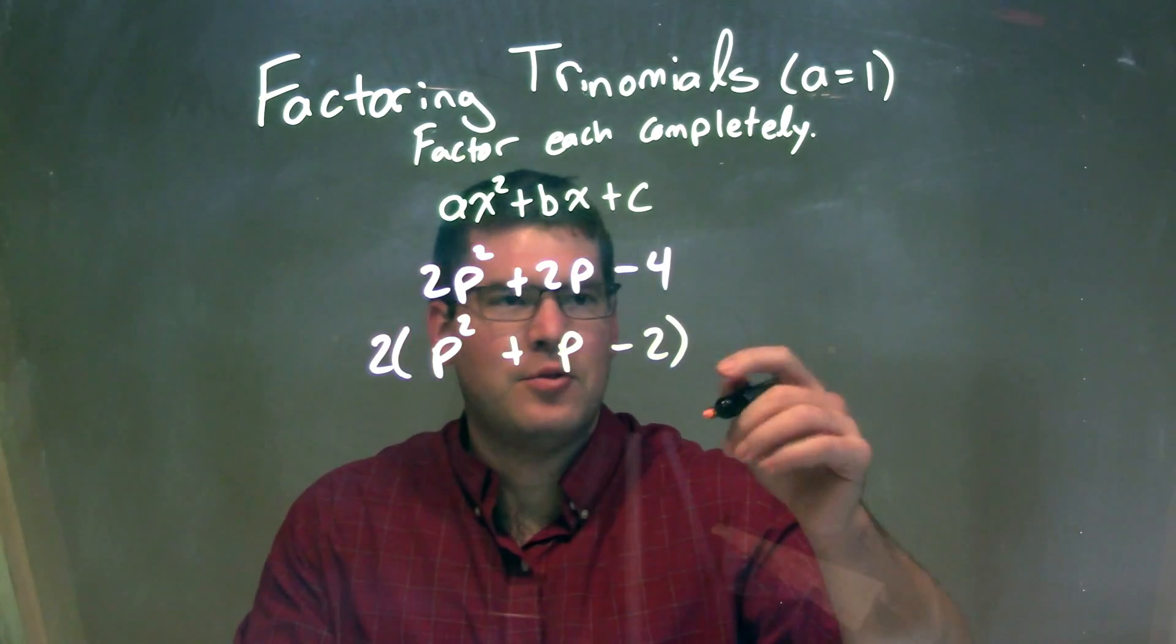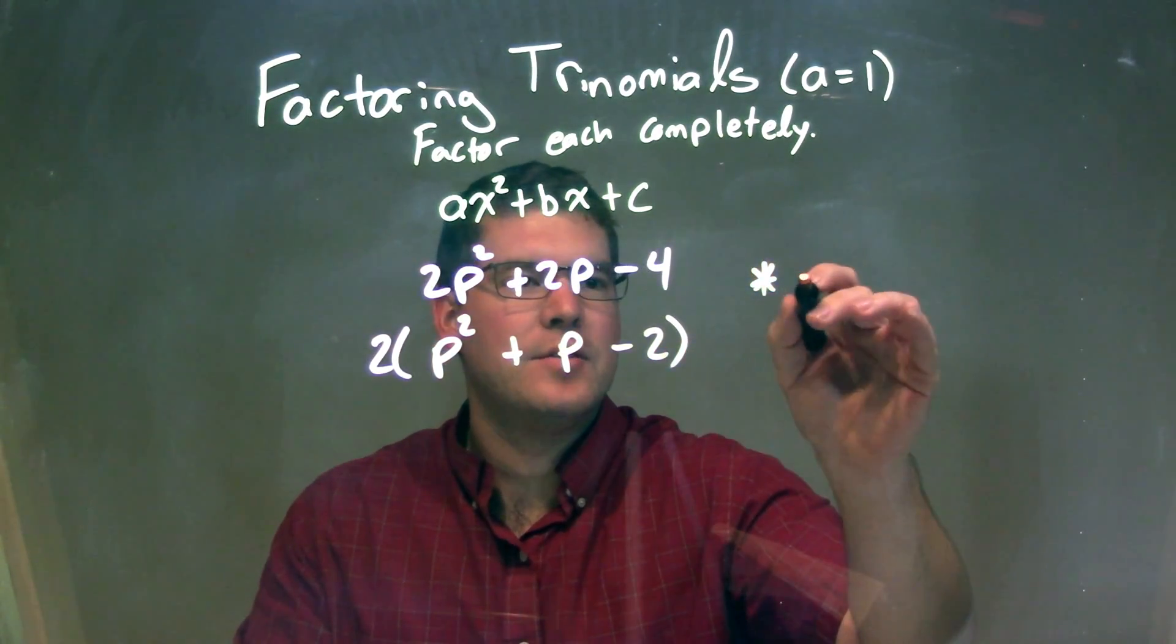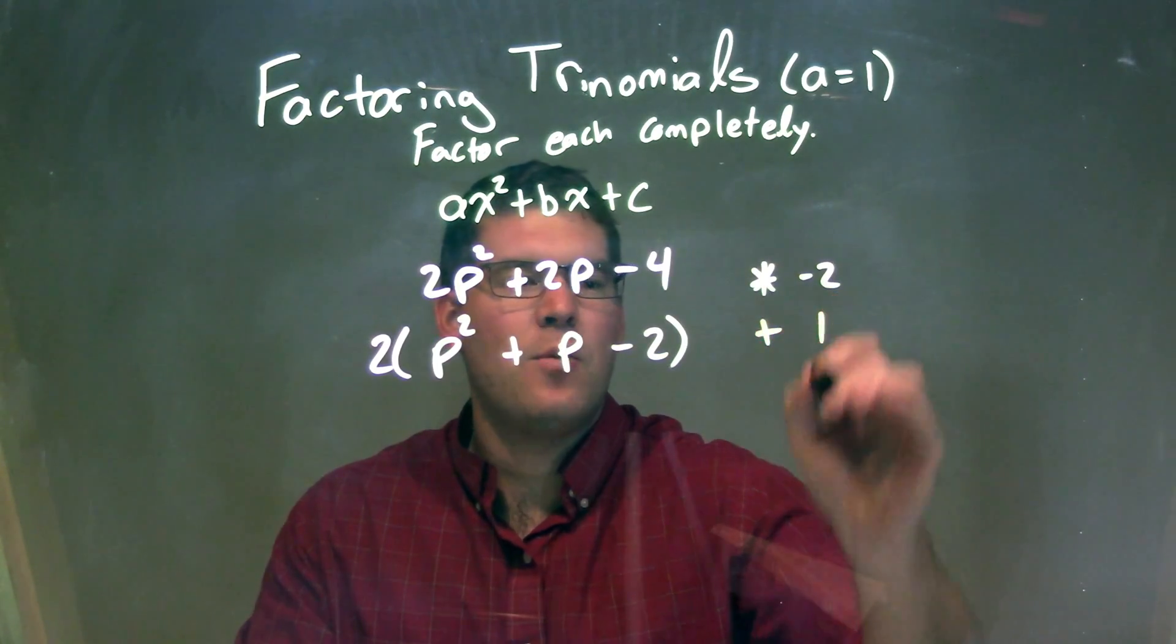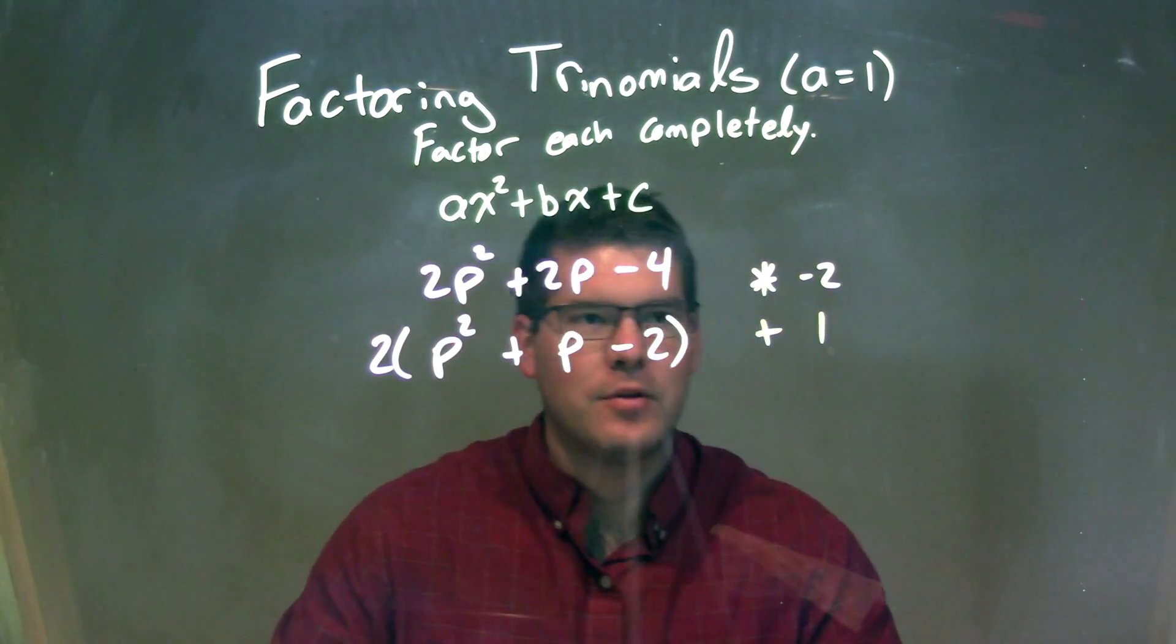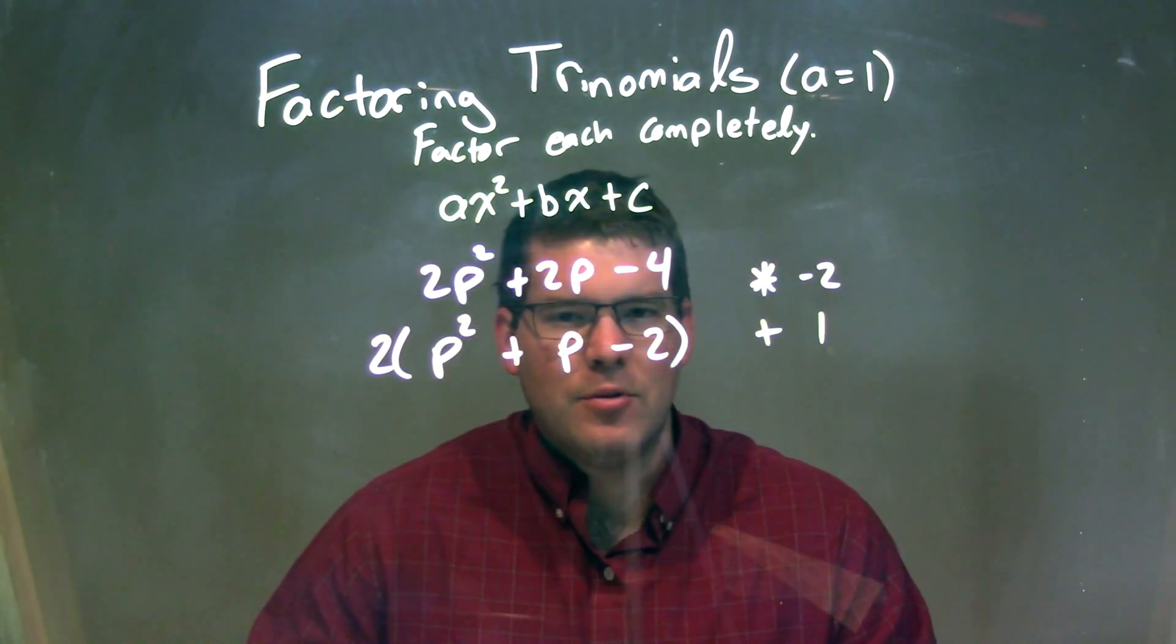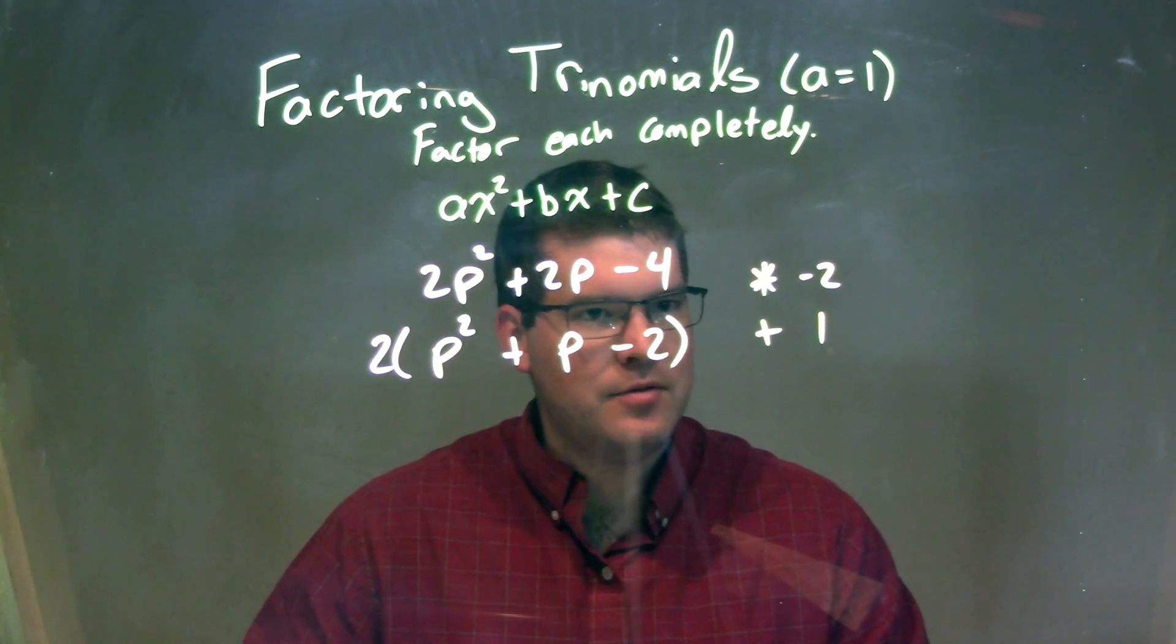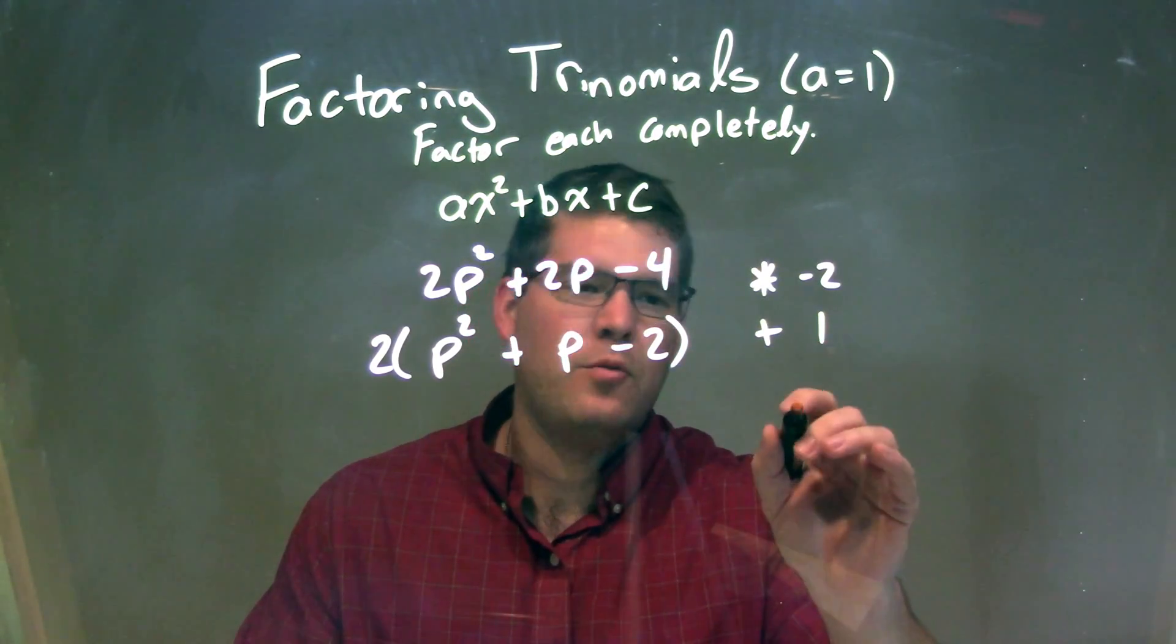Now we have an a value of 1, so we ask ourselves: what two numbers multiply to the c value, negative 2, but add to be 1? Two numbers that multiply to negative 2 could be negative 2 and positive 1, or negative 1 and positive 2.